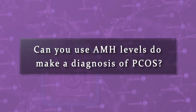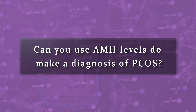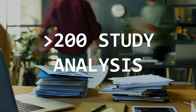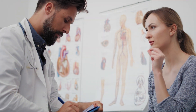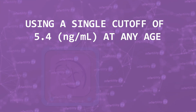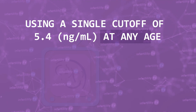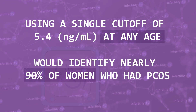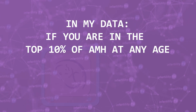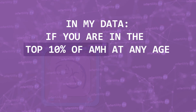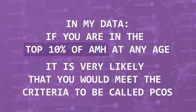Can you use AMH levels to make a diagnosis of PCOS? Maybe. At the time this video was made in 2025, there are no scientific organizations which include AMH in their guidelines for diagnosing PCOS. However, a recent analysis of over 200 studies found that women with PCOS very often have high AMH levels. In fact, using a single cutoff of 5.4 at any age would identify nearly 90% of women who had PCOS by more traditional criteria. In my data, if you are in the top 10% of AMH at any age, it is very likely that you would meet the criteria to be called PCOS.